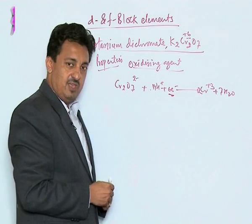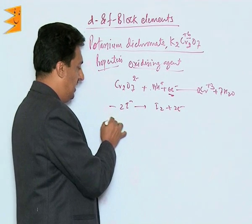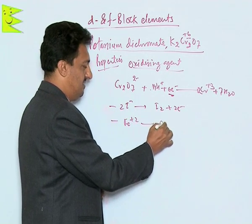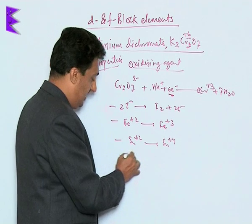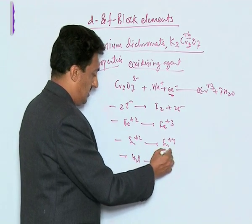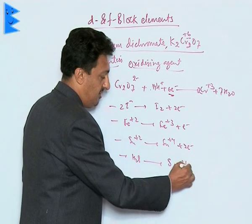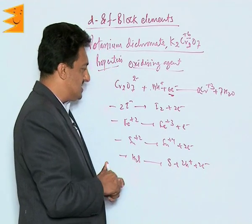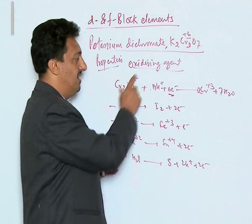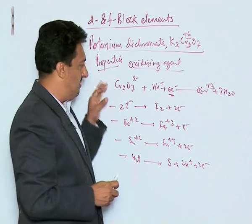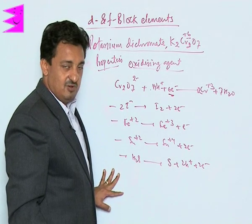The dichromate ion oxidizes many species: it oxidizes iodide to iodine, ferrous ions to ferric ions, stannous ion to stannic (+4), and H₂S to sulfur giving 2H⁺ and 2 electrons. These oxidation half-reactions can be combined with the reduction half-reaction to give the overall reaction. Due to its tendency to get reduced to Cr+3, it can oxidize all these species to higher oxidation states.